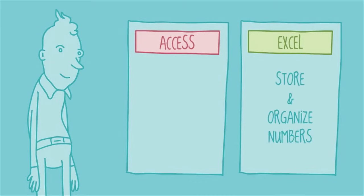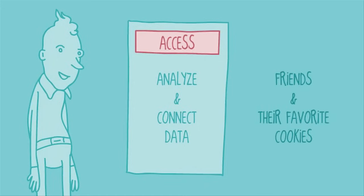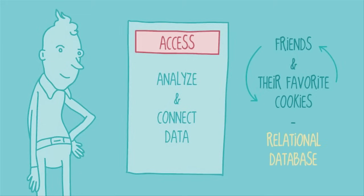While Excel is great at storing and organizing numbers, Access is better at analyzing and connecting other types of data — for example, names and descriptions, or your friends and their favorite cookies. The databases you'll be working with in Access can actually understand how different lists and their contents relate to one another. We call this a relational database, for its ability to understand relationships. And it's really what sets Access apart.